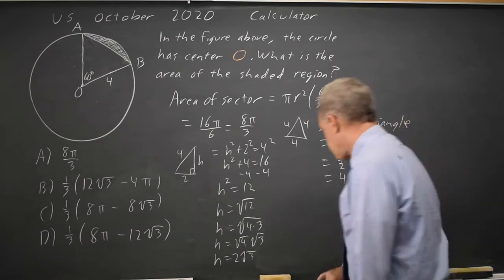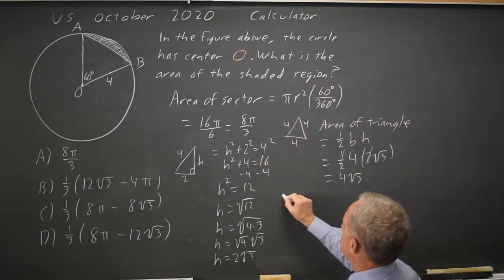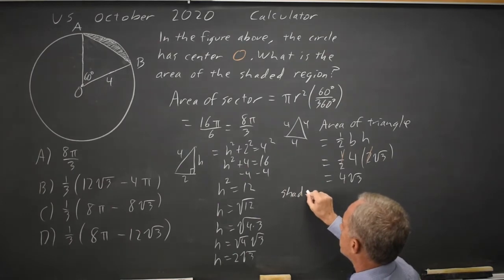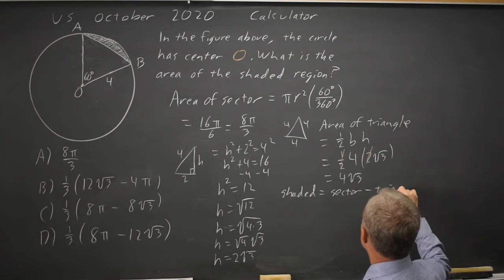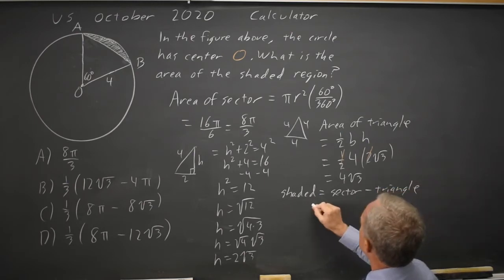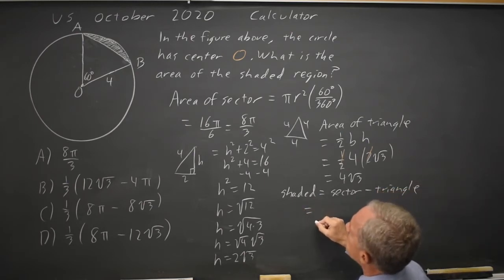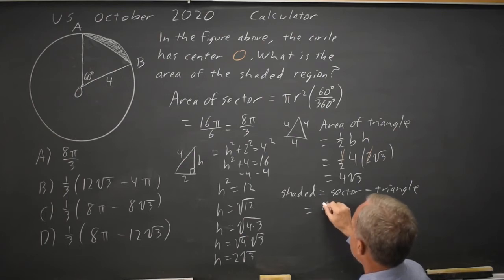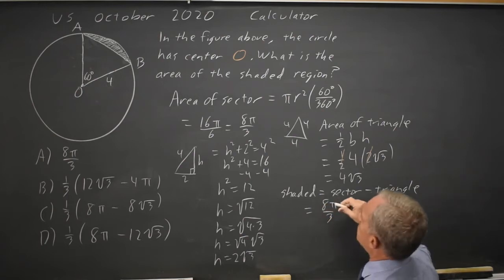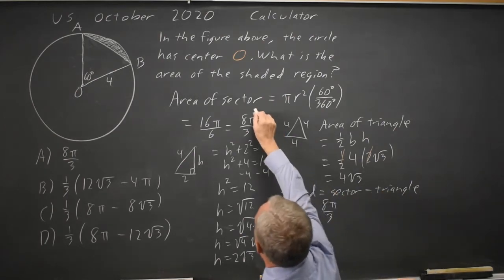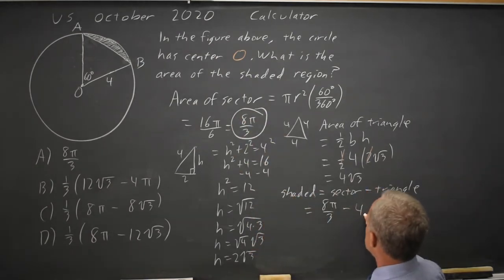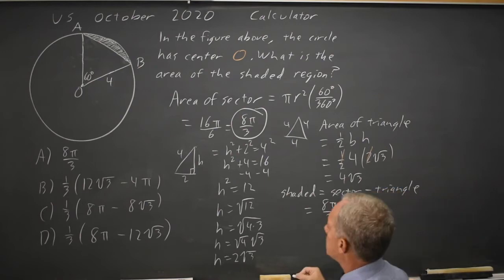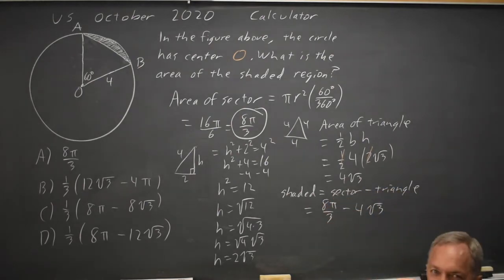So the shaded region is the sector minus the triangle — that's 8π over 3 minus 4 root 3. But none of the answers are in that form.